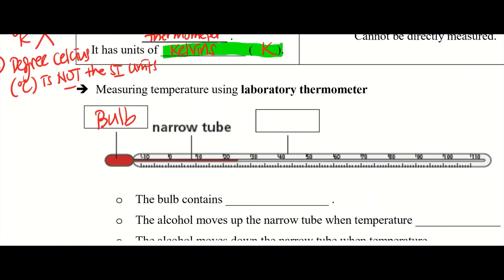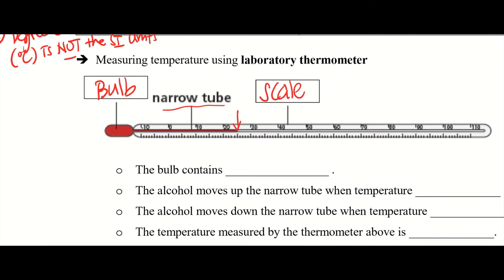So how do you read off the temperature? If the liquid is up to a certain point, we get the scale. The three most important parts of the lab thermometer: number one, the bulb — which contains the liquid that we will use to read. The narrow tube — in which the liquid will flow up; the higher the temperature, the more it will travel up the narrow tube. And then we will use the scale to read, just like a ruler — this is 30 degrees, 40 degrees, 50 degrees, and so forth.